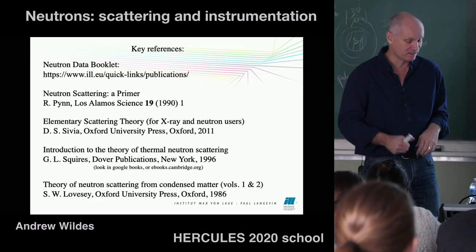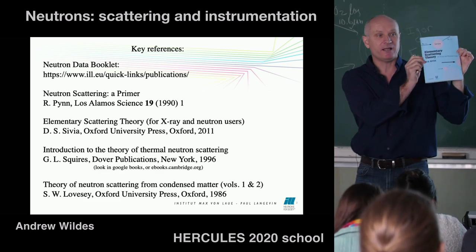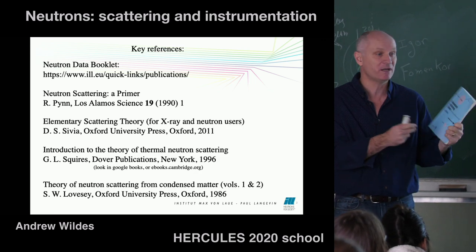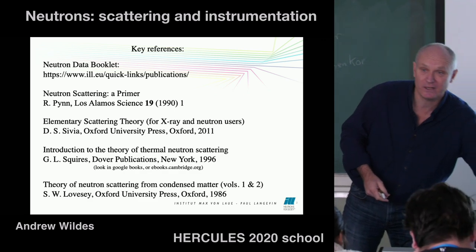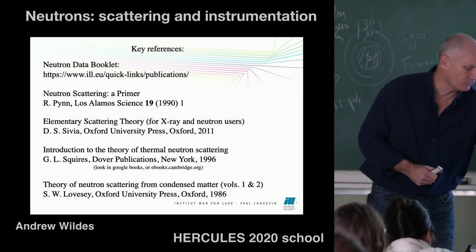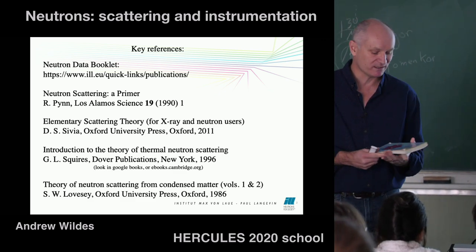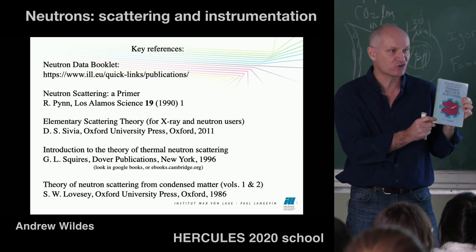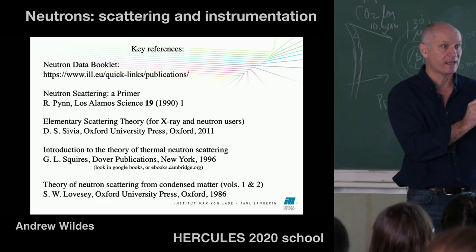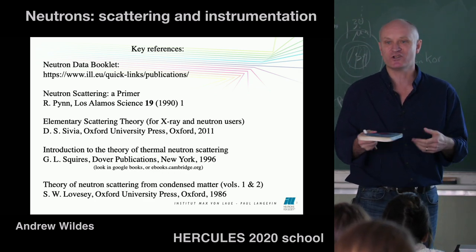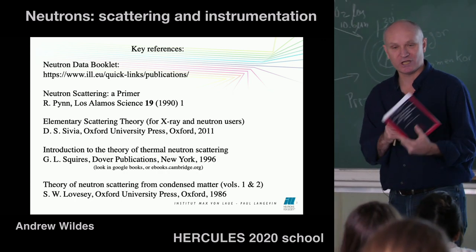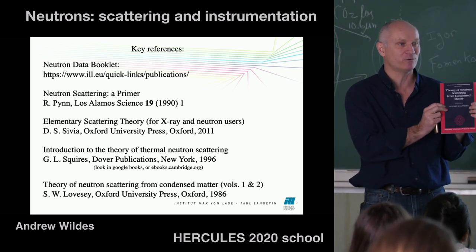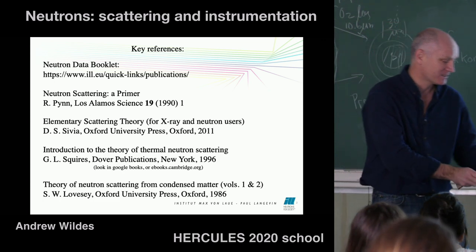Then you start getting into some of the more mathematical aspects. The first one — and I can't recommend this book enough — is by Davinda Sivya: 'Elementary Scattering Theory.' This is possibly the best introduction to scattering in general I've ever come across. It's extremely pedagogical and covers both x-rays and neutrons. Then there's Gordon Squires' book — very well-thumbed — which is essentially a postgraduate lecture series covering fundamental derivations of all the equations. And if you're a real masochist, there's Stephen Lovesy's two-volume work, written from a purely theoretical physics point of view.